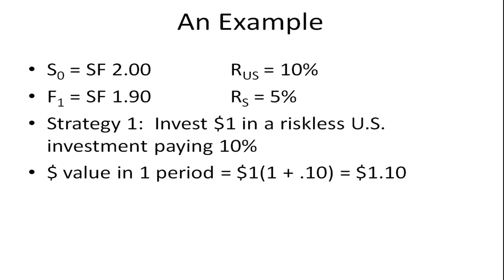What's the first strategy that a US investor could undertake? That person could invest one dollar in a riskless US investment paying 10%. At the end of one period they're going to have $1.10 — that is, one dollar times (1 + 0.10).